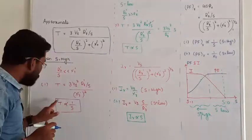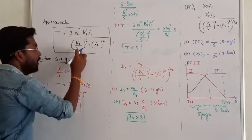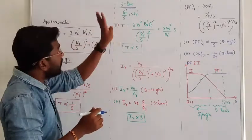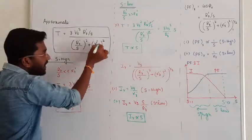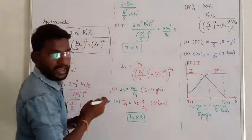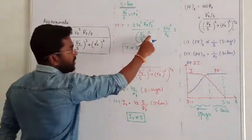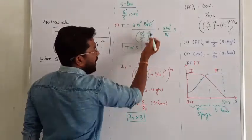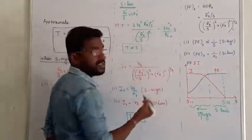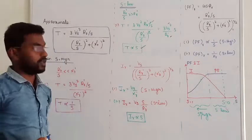When slip is very less, RR' by S will become greater than the value of XR, so we can neglect the effect of XR. The result is: torque = 3 × Vs² × RR' by S, and in the denominator we neglect rotor reactance. The RR' by S terms cancel, leaving torque directly proportional to slip for the induction machine at low slip.